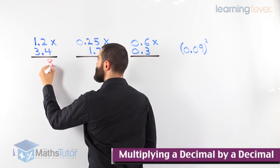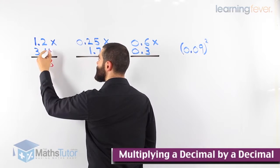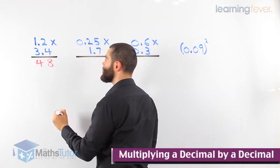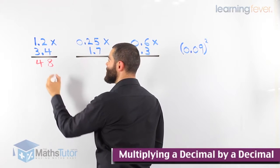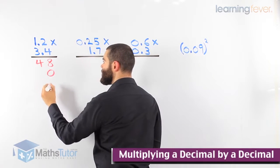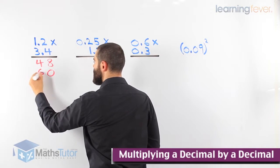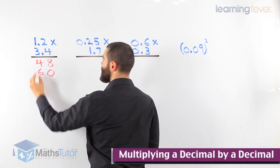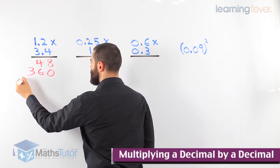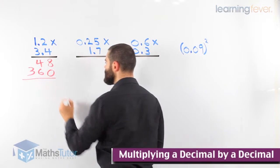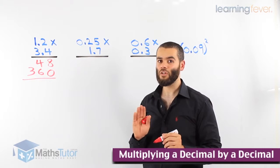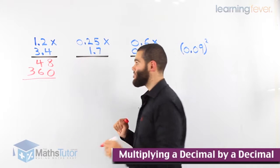4 times 2 is 8. 4 times 1 is 4. Then we move to the next number. We have to put our magic zero. 3 times 2 is 6. 3 times 1 is 3. Now what do we do next? We have to add them up.